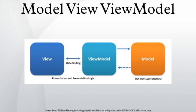Regarding the elements of the MVVM pattern: the model, as in the classic MVC pattern, refers to either a domain model which represents real state content, or the data access layer that represents that content. The view, as in the classic MVC pattern, refers to all elements displayed by the GUI such as buttons, labels, and other controls.